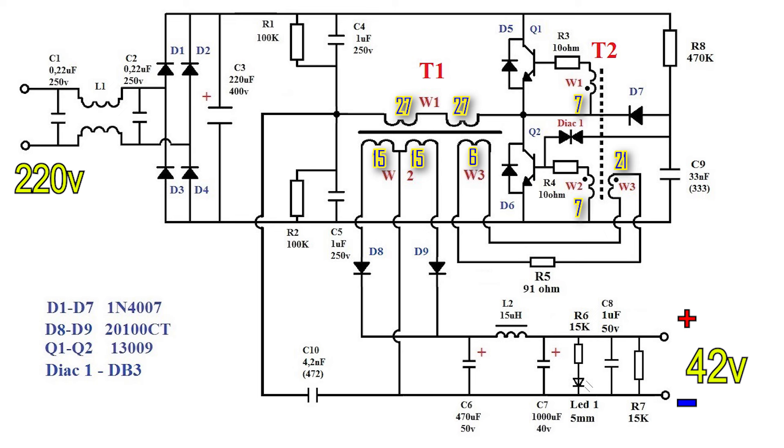Each winding is connected to the base of the transistor through a resistor. The transistors open in turn, each at its own half cycle.